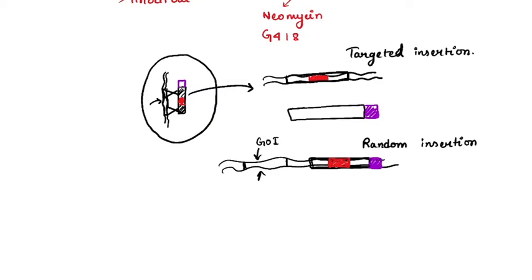So in targeted insertion, no thymidine kinase is inserted into the DNA of the cell. In random insertion, the thymidine kinase is incorporated along with the neomycin resistance gene. The cell with targeted insertion would be resistant to G418 but not affected by gancyclovir, while the cell with random insertion carries thymidine kinase and is sensitive to gancyclovir.